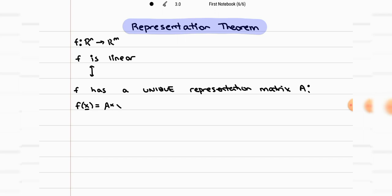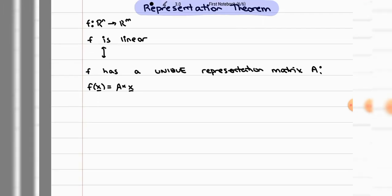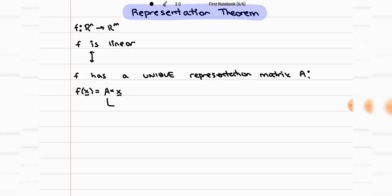Generally, if the function is linear, f and A are interchangeable. They're just used in different ways — either we write it in function form on the left or in matrix form on the right as multiplication. The representation matrix is going to have f of E1, f of E2, and so on as the columns. E1, E2, etc. are the fundamental vectors, and they're also the columns of the identity matrix.